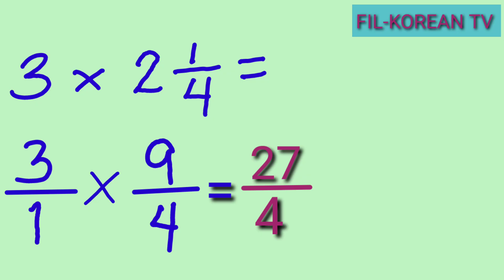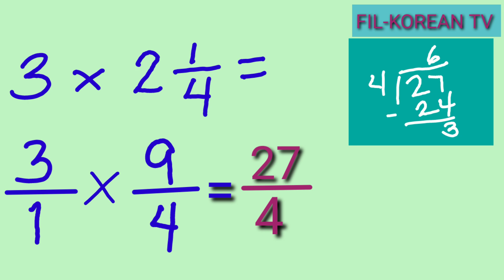It is an improper fraction, so we need to simplify it by dividing the numerator by the denominator. If we divide 27 by 4, the answer is six and there is a remainder of three.